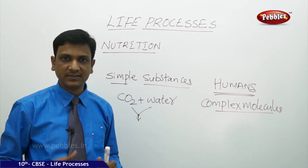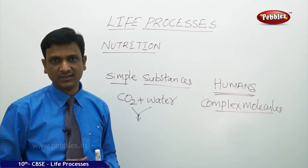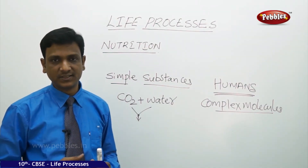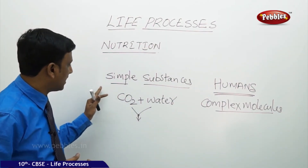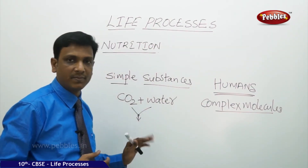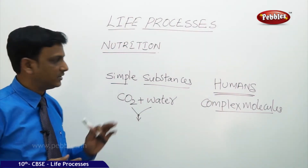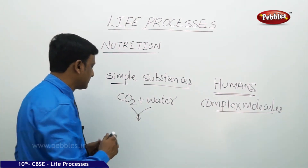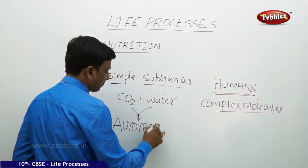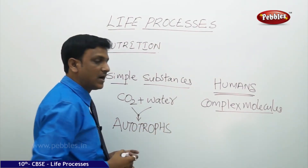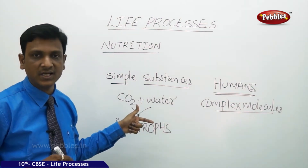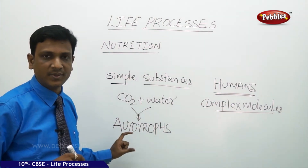Humans and other animals feed on plants and cannot make food directly from sunlight. Plants take simple substances like carbon dioxide and water from the environment and, in the presence of sunlight, prepare food materials. These kinds of organisms are called autotrophs. Green plants are autotrophs because they use simple substances from the environment to prepare their own food.